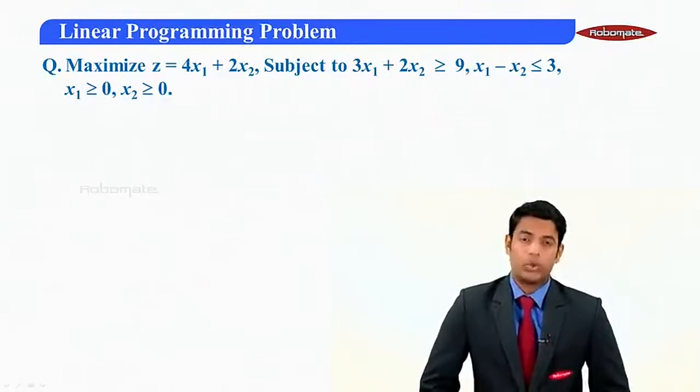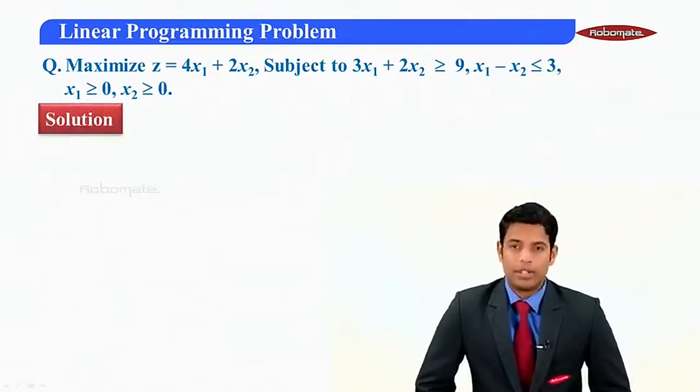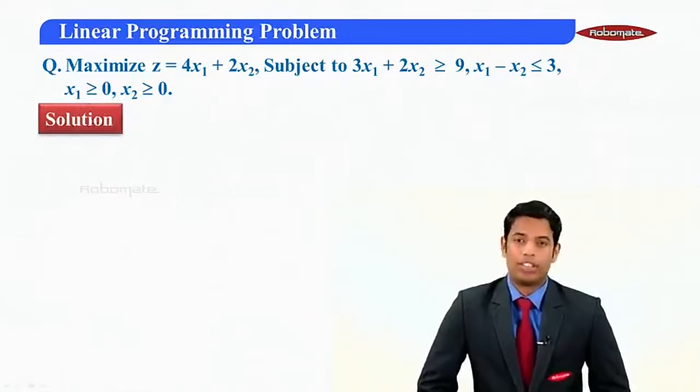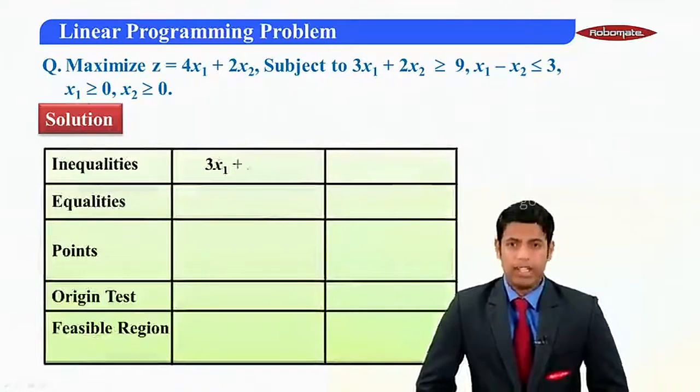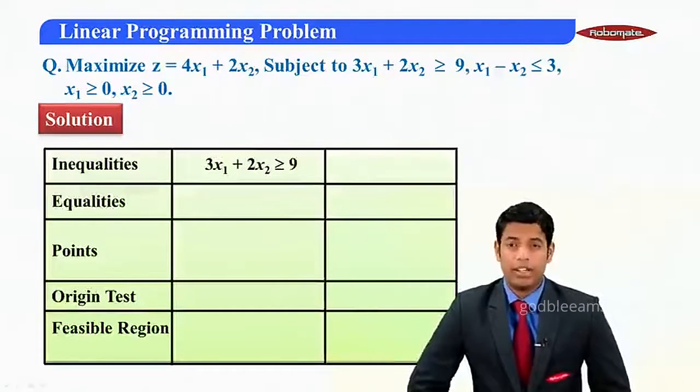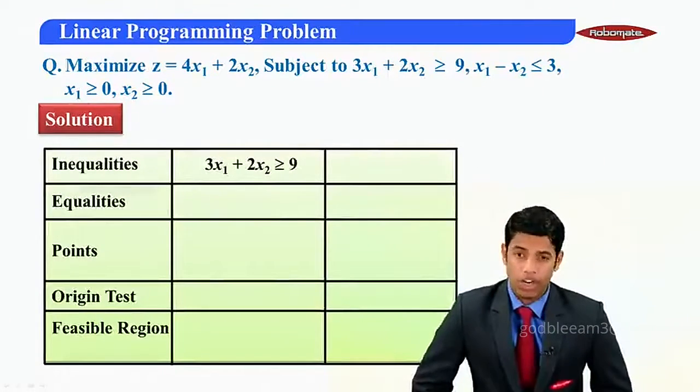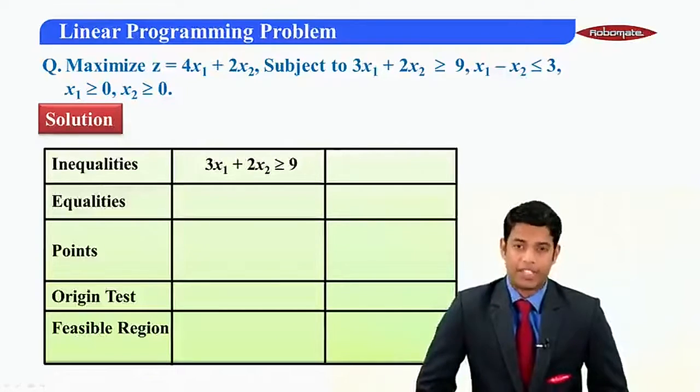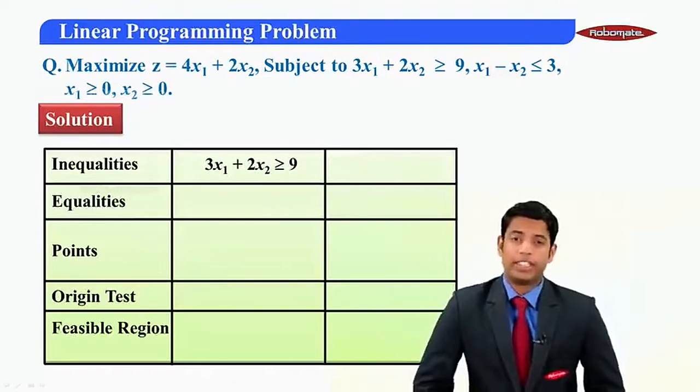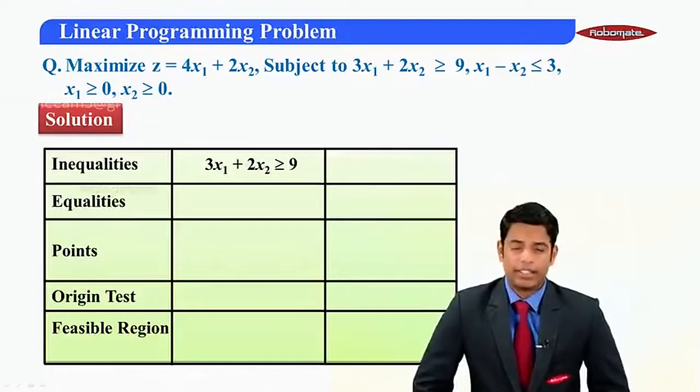...and rest non-negativity constraints that are x1 greater than or equal to 0 and x2 greater than or equal to 0. Let's see how to solve this problem. We'll construct again a table of inequalities, equalities, points, origin test and feasible region.